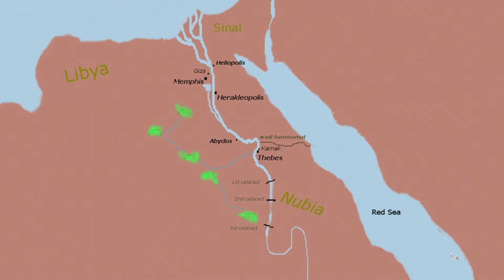The governors were infighting among themselves while all claiming loyalty to Memphis, and at the same time vying for power against each other. Eventually the governors took over the kingdom and the actual rule of the pharaohs fell apart, and this led to the intermediate period.